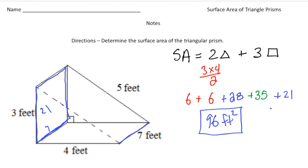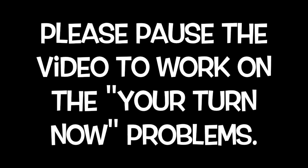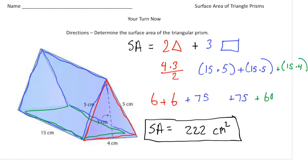Why don't you pause the video and try the 'your turn' problem. When you're done, hit play — you can see how you did. Good luck. Welcome back! Let's see how you do with this practice problem. Here you have another triangular prism. To get the surface area, it's twice the area of the triangles plus the area of the three rectangles.